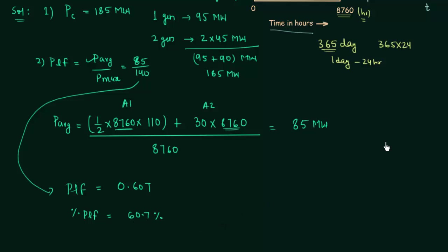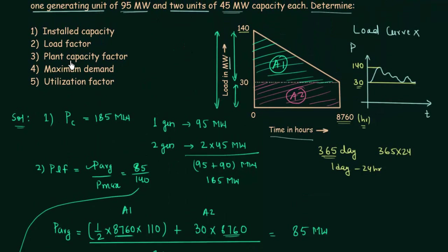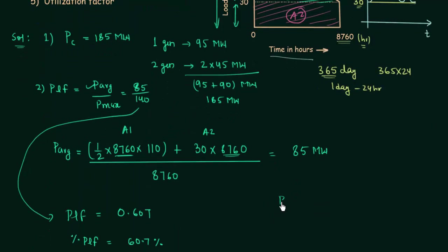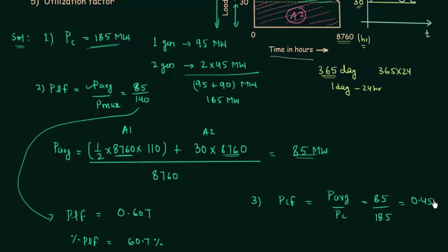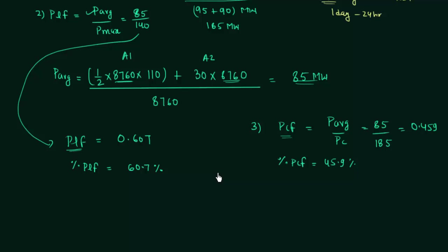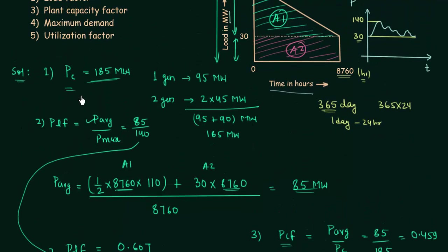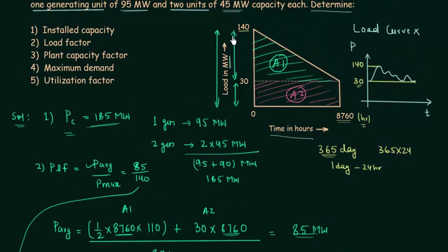In the third part we calculate the plant capacity factor, PCF = average power / plant capacity = 85 / 185 = 0.459, so the percentage plant capacity factor is 45.9%. Comparing PLF and PCF for the same scenario, PLF is higher than PCF because the plant capacity is 185 megawatt while the maximum power is only 140 megawatt — maximum power is smaller than the installed capacity, which is why PCF is smaller than PLF.